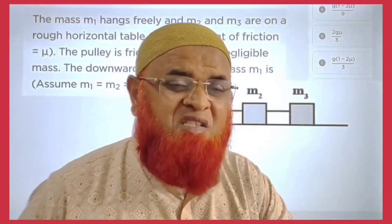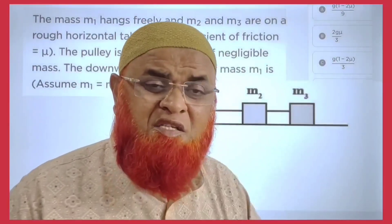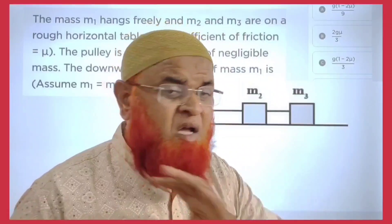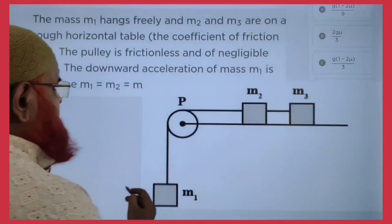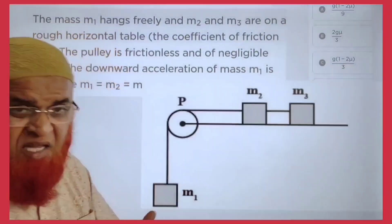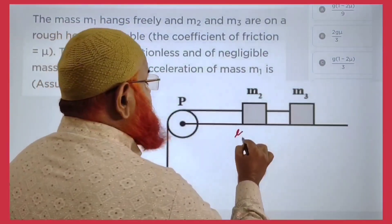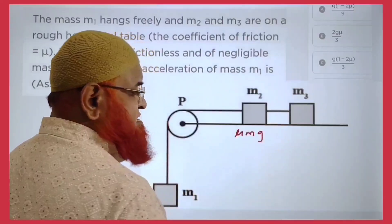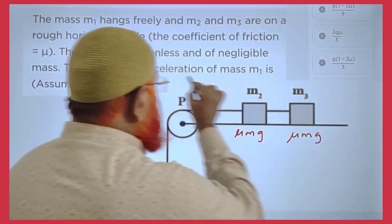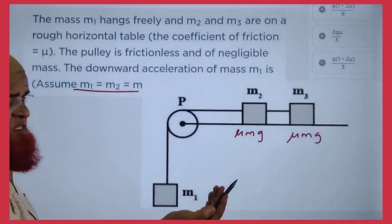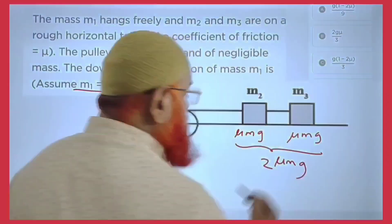My students, this is a previous year question related to friction. You can solve this friction problem without any free body diagram in just seconds. Here, 3 masses are same. The friction on one mass is μMG, and the other mass also μMG because all masses are same. These combined together can be taken as 2μMG.